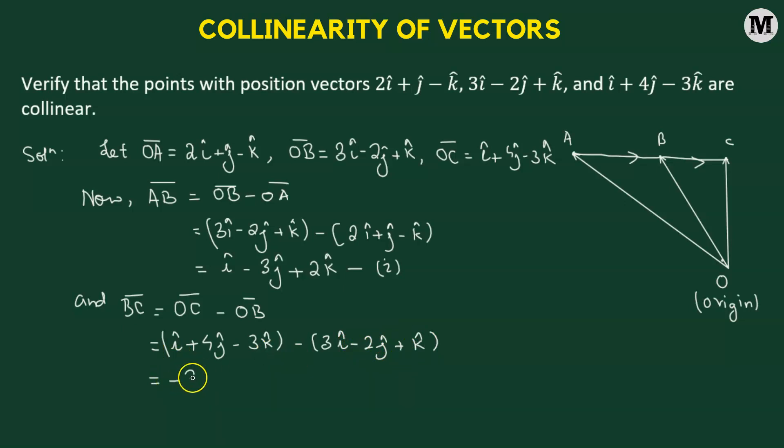So, i cap minus 3i cap will be negative 2i cap. Then we have positive 4j cap minus negative 2j cap. So, that's going to give us 6j cap. Then negative 3k cap minus k cap will be 4k cap.